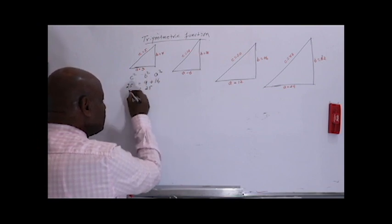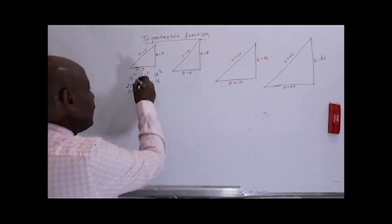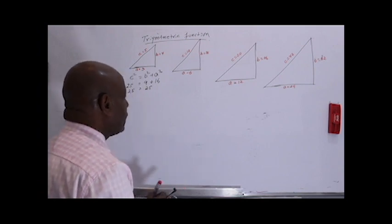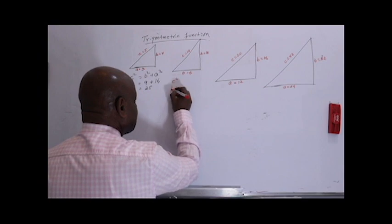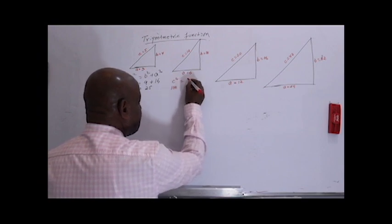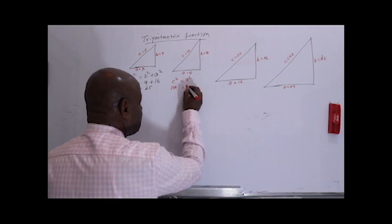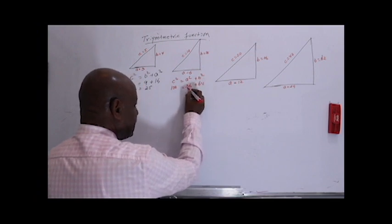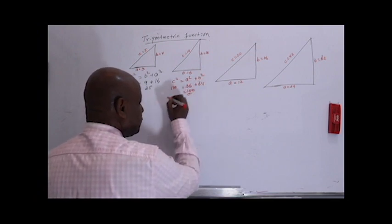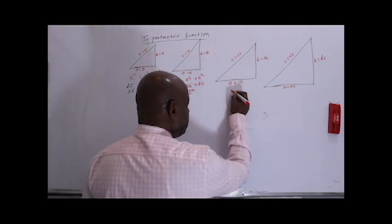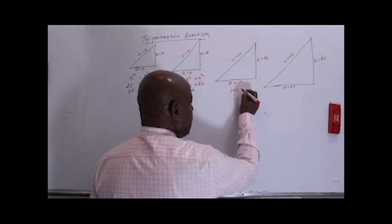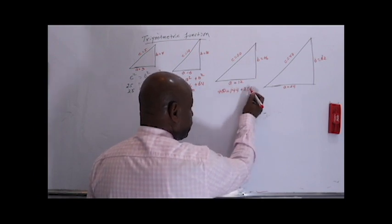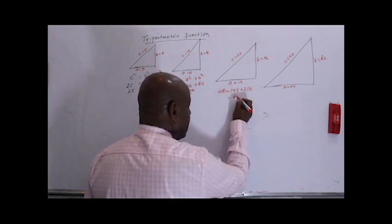We have to write C squared is equal to B squared plus A squared. C squared is 100. A squared is 36. B squared is 64. So we have to write 36 plus 64 equals 100.